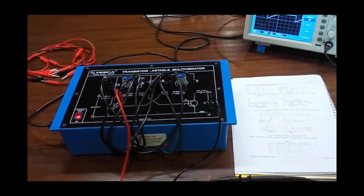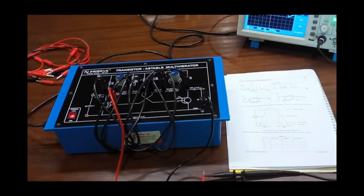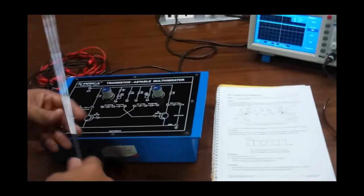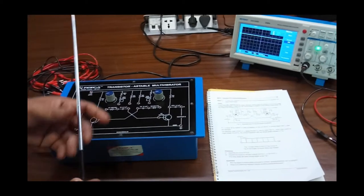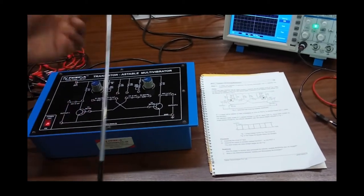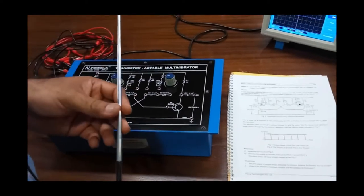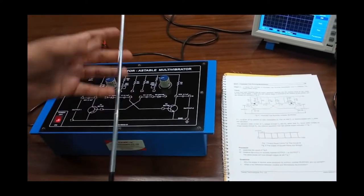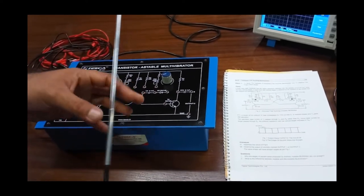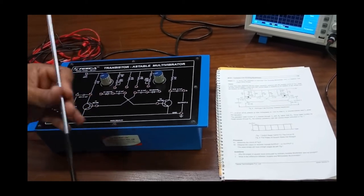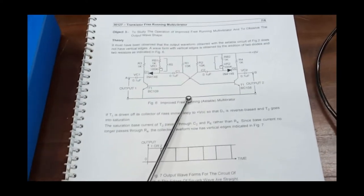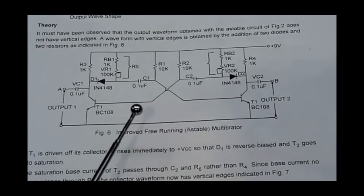Now we move on to the third experiment: the improved multivibrator. The objective is to study the operation of the improved free-running multivibrator and observe the output waveform. It has been observed that the output waveform from the astable circuit does not have vertical edges. A waveform with vertical edges is obtained by the addition of 2 diodes and 2 resistors. The circuit is given in the manual.